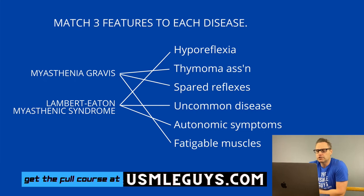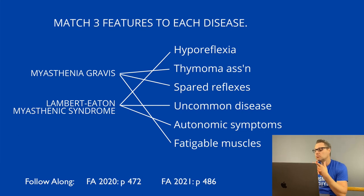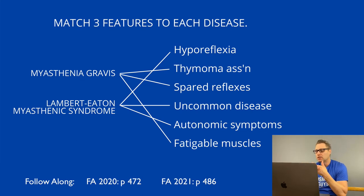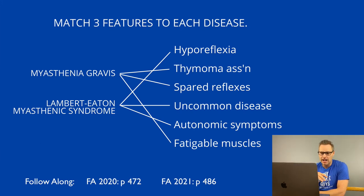In myasthenia gravis, look out for fatigable muscle weakness, ptosis — a big indicator — diplopia, proximal muscle weakness, respiratory muscle involvement presenting as dyspnea, and bulbar muscle involvement presenting as trouble swallowing, difficulty speaking or chewing. All of these worsen with use of muscles — that's the fatigable component. Reflexes won't be affected in MG. In Lambert-Eaton, we see proximal muscle weakness and autonomic symptoms like constipation, dry mouth, and impotence, and we tend to see hyporeflexia.